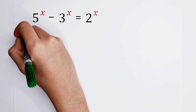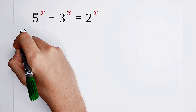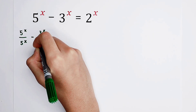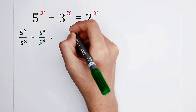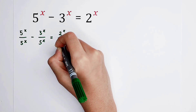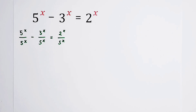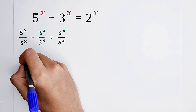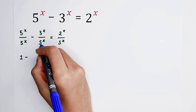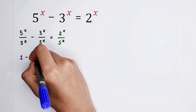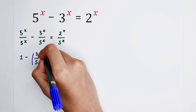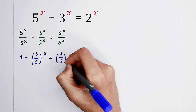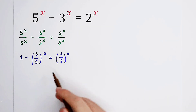The left side divided by 5 to the power of x, and the right-hand side, 2 to the power of x, also divided by 5 to the power of x. Then 5 to the power of x divided by 5 to the power of x is 1. So it is 1 minus 3 to the power of x over 5 to the power of x, which is 3 over 5 all to the power of x. And the right-hand side as well, it is 2 over 5 all to the power of x.